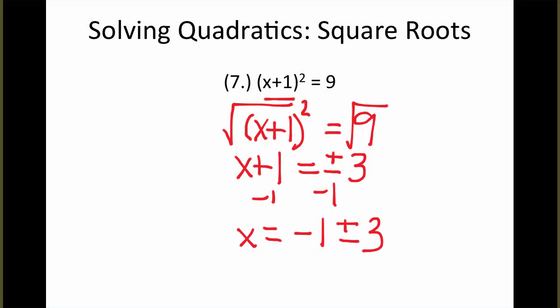Now, I don't think you should leave your answer like that, because you can easily evaluate each expression there. You can add the two together, negative 1 plus 3 will give you 2, and then you could subtract as well. Negative 1 minus 3 will equal a negative 4. And so the two solutions, again, that we get are that x is equal to either 2 or negative 4.